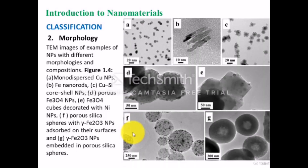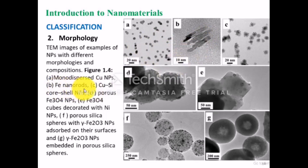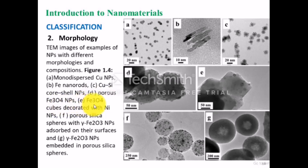Figure 1.4 shows different morphologies of nanoparticles studied using transmission electron microscopy. Figure (a) shows monodispersed copper nanoparticles, which are very small in size. Figure (b) represents iron nanorods. Figure (c) shows copper-silicon core-shell nanoparticles — core-shell nanoparticles will be described later. Figure (d) shows porous iron oxide nanoparticles. Figure (e) represents iron oxide cubes decorated with nickel nanoparticles. Figure (f) represents porous silica spheres with alpha-iron oxide nanoparticles embedded in the pores of silicon oxide.